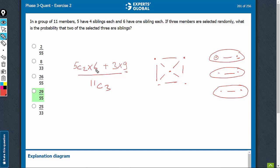5C2 is 10, 10 times 6, 60. 60 plus 27, 87. 11C3 is 11 times 10 times 9 upon 6. So, 6 comes here. This is 15. 87 upon 165 or divide each by 3. 29 upon 55. That's the answer.